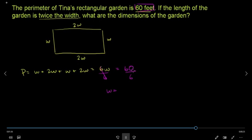When W equals 60, we have 6W equals 60. So W equals 10 feet, and the length is 20 feet.